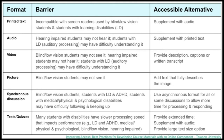If you have video, someone who is blind or has low vision won't be able to see it, hearing-impaired students cannot hear it, and students with learning disabilities may have difficulty understanding it. Accessible alternatives include descriptions, captions, written transcripts, and describing the visuals shown in the video. If you have pictures, blind or low-vision students can't see them — adding text that fully describes what's in the image will help all learners participate.